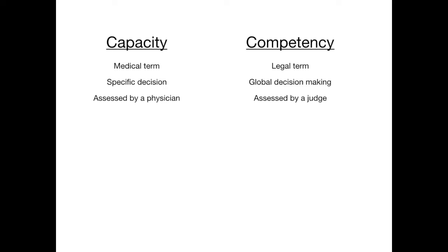You've probably seen shows like Law and Order where somebody is described as incompetent to stand trial. That should remind you that incompetency is something assessed legally by a judge — it strips you of your global decision making ability. A court can mandate that you're not allowed to make decisions for yourself and will appoint a decision maker for you. Capacity, on the other hand, is a strictly medical term — your ability to make a specific medical decision, assessed by a physician, oftentimes a psychiatrist, but it can be any physician. Capacity can change with the decision at hand or from moment to moment, whereas competency usually does not change — it's a global legal issue.